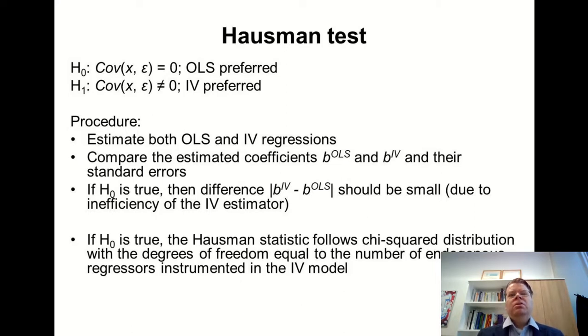There is a test statistic called the Hausman statistic, and it has the chi-squared distribution if the null hypothesis is true. We can calculate this test statistic and see if it's small enough to maintain the null hypothesis, or if it's so large that if the null hypothesis is true, it is very unlikely the test statistic would be so large. In that case, we would reject the null hypothesis and choose in favor of the instrumental variable estimator.